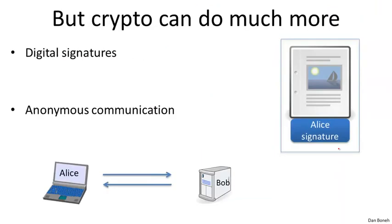The first example is what's called a digital signature. A digital signature is basically the analog of a signature in the physical world. In the physical world, when you sign a document, you write your signature on it, and your signature is always the same. In the digital world, this can't possibly work because if an attacker obtained one signed document, he can cut and paste your signature onto some other document you might not have wanted to sign.